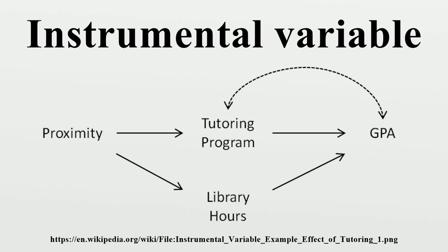Proof that β_GMM collapses to β_IV in the just-identified case: in the just-identified case, we have as many instruments as covariates, so that the dimension of X is the same as Z, and hence Z'X, X'Z, and Z'Z are all square matrices of the same dimension. We can expand the inverse using the fact that for any invertible n × n matrices A and B, (AB)^{-1} = B^{-1} A^{-1}.